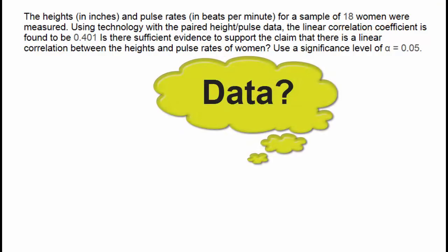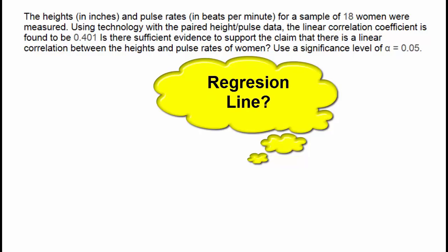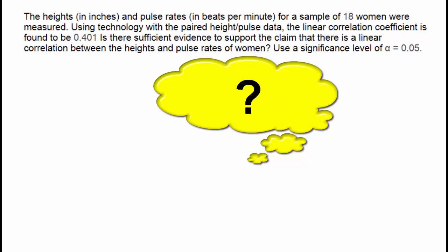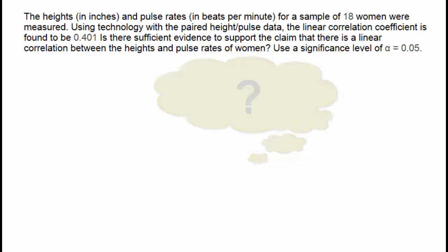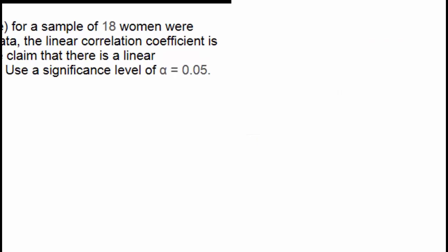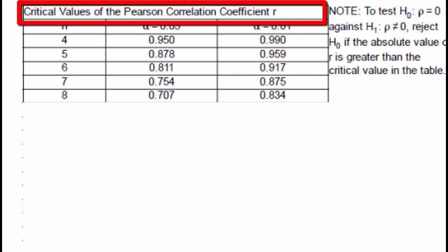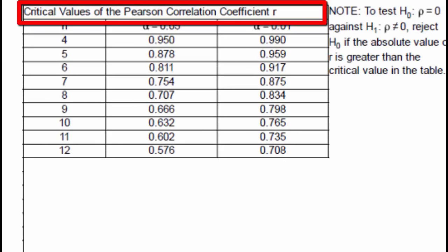In this problem, we're not given very much to work with. We're told the value of the linear correlation coefficient and that the number of women in the sample is 18. However, we're not given the data set. We're also not given the equation of the regression line. We don't have a p-value, and therefore we can't measure p-value against alpha. For this type of problem where we're given very little information, the only way to make a decision is to look at the critical values of the Pearson correlation coefficient r.